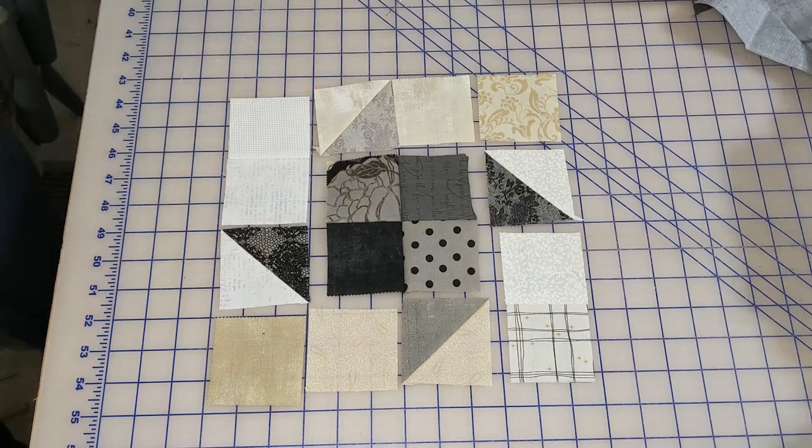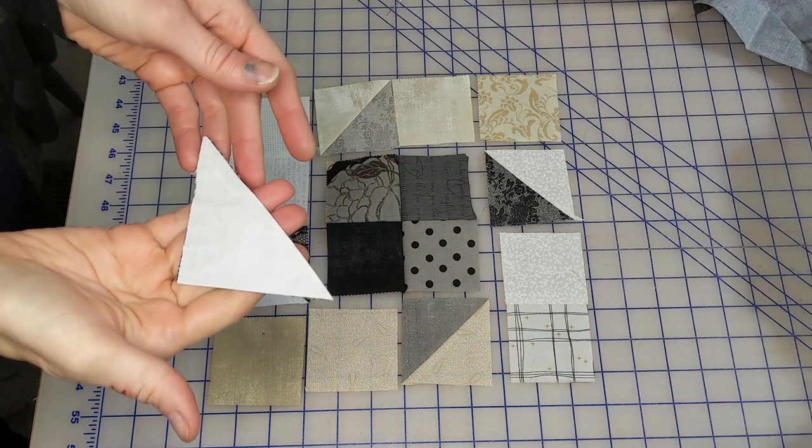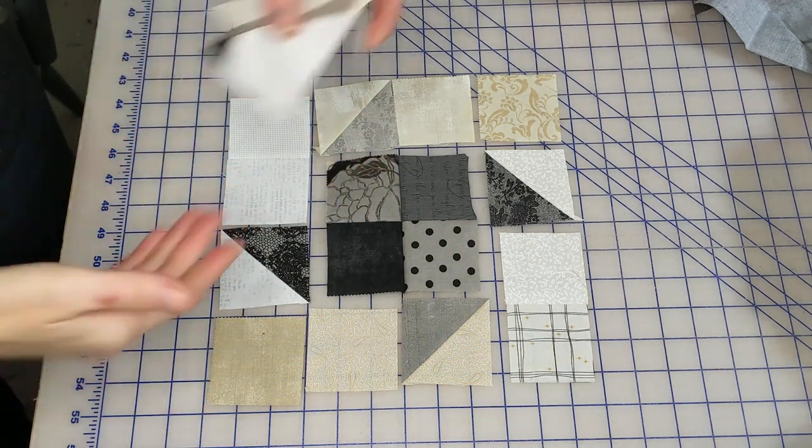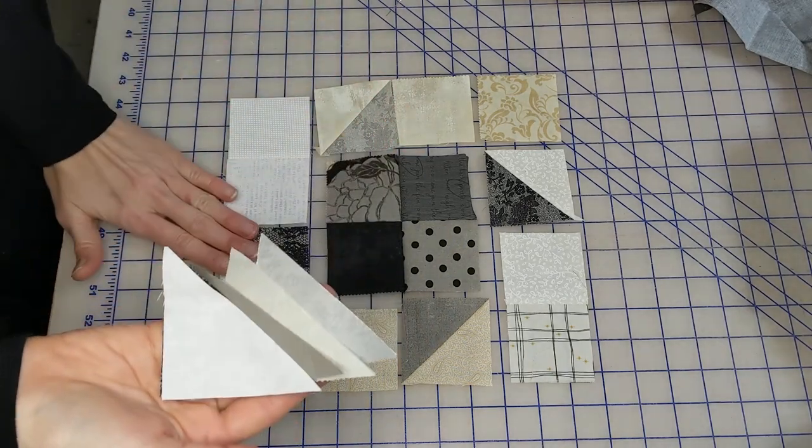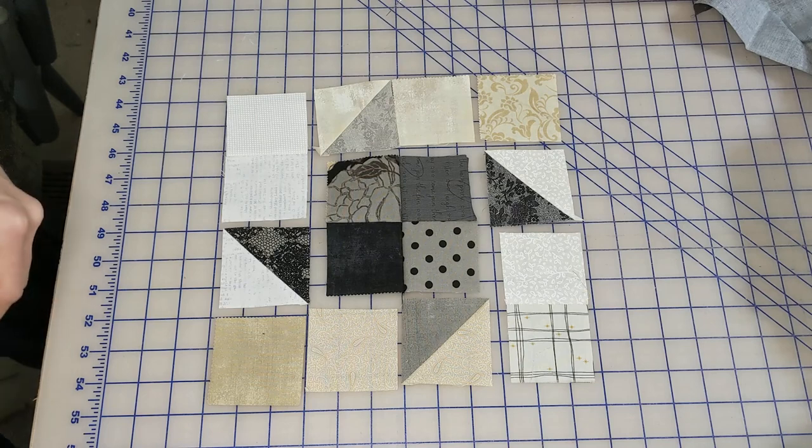So we have our half-square triangles. Those are cut down the center and then stitched a quarter inch in. I've got my four here that are extra from our singles. I'll save those for something else. I'm liking how it's looking so far, guys.